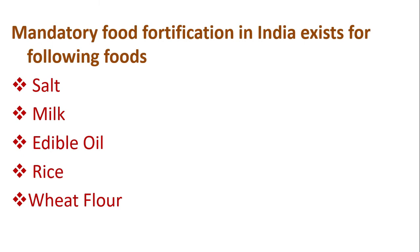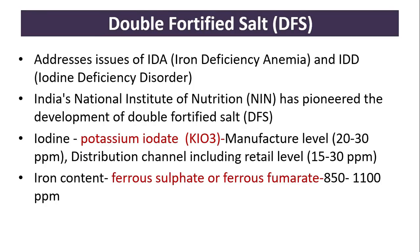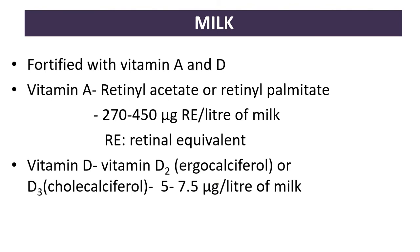Kuposhan Muktabharat aims for malnutrition-free India by 2030, using food fortification as an intervention to curb micronutrient deficiencies. Mandatory food fortification in India exists for the following foods: salt, milk, edible oil, rice, and wheat flour. Double fortified salt (DFS) addresses the issue of iron deficiency anemia and iodine deficiency disorders. India's National Institute of Nutrition pioneered the development of DFS. Iodine as potassium iodate: 20–30 ppm at manufacture, 15–30 ppm at distribution/retail level. Iron as ferrous sulfate or ferrous fumarate: 850–1100 ppm.